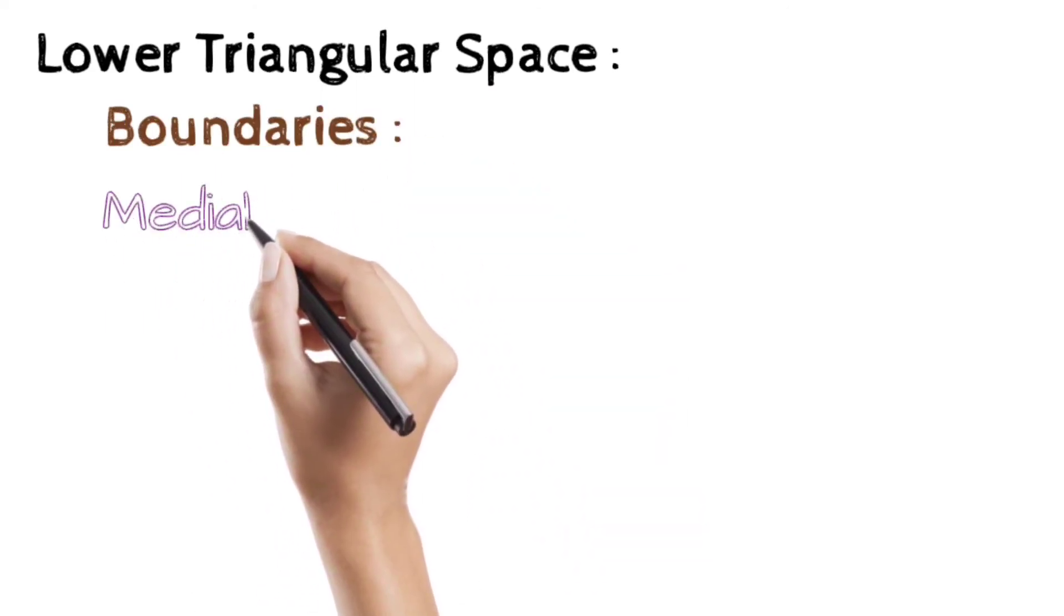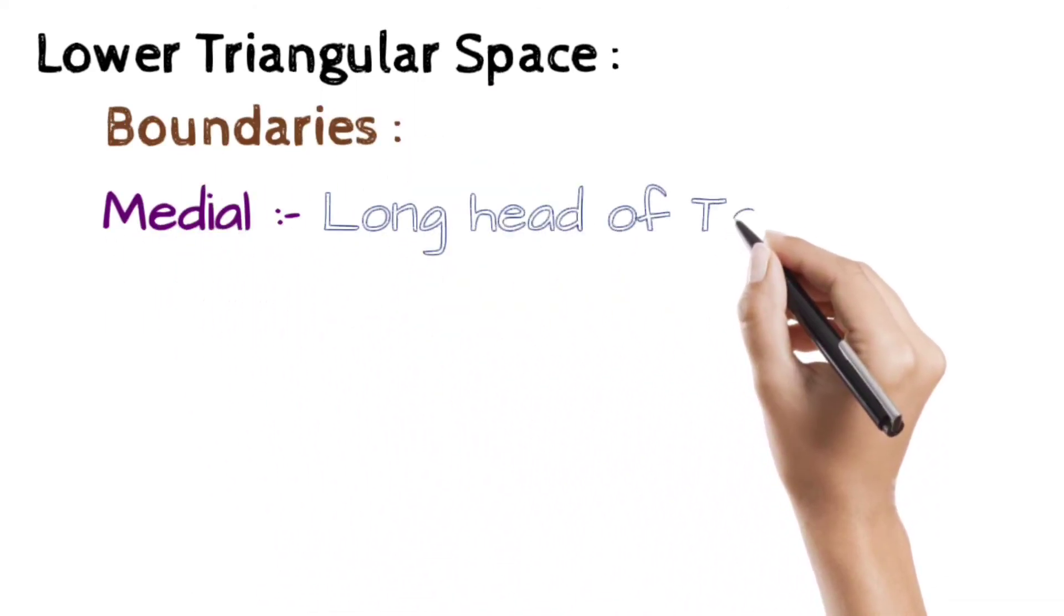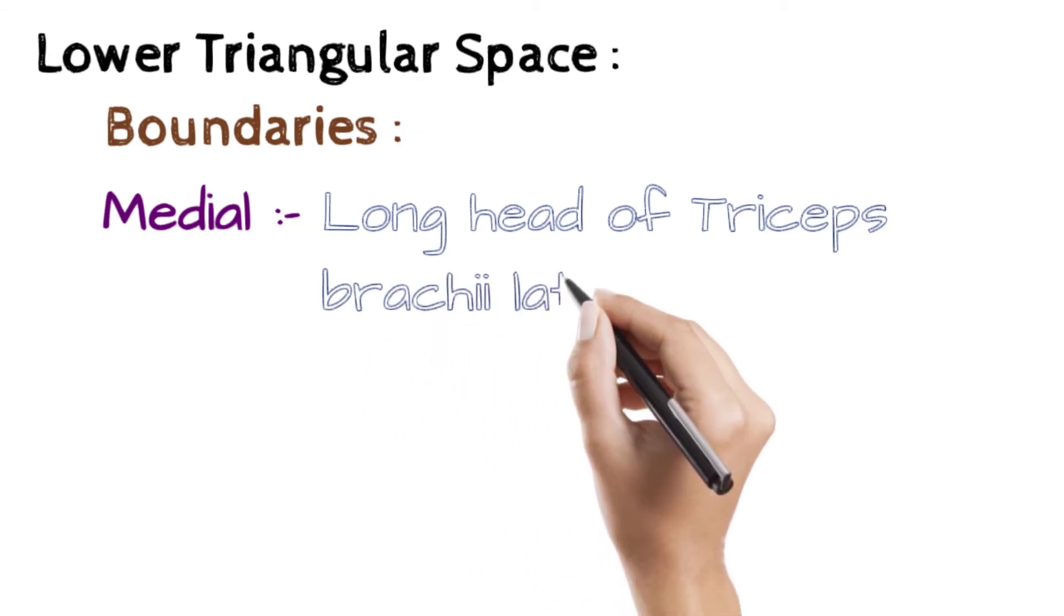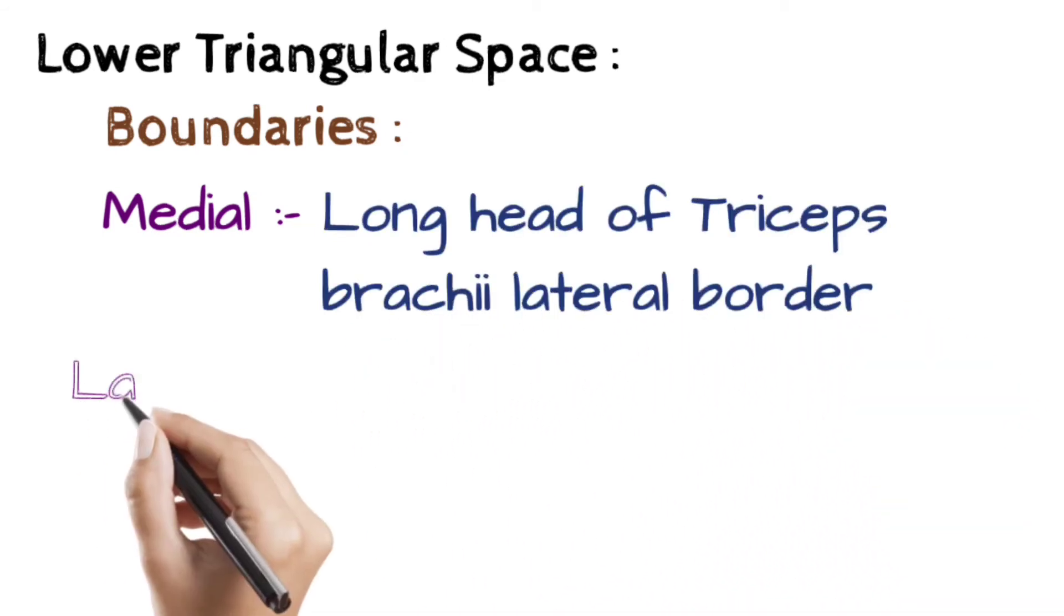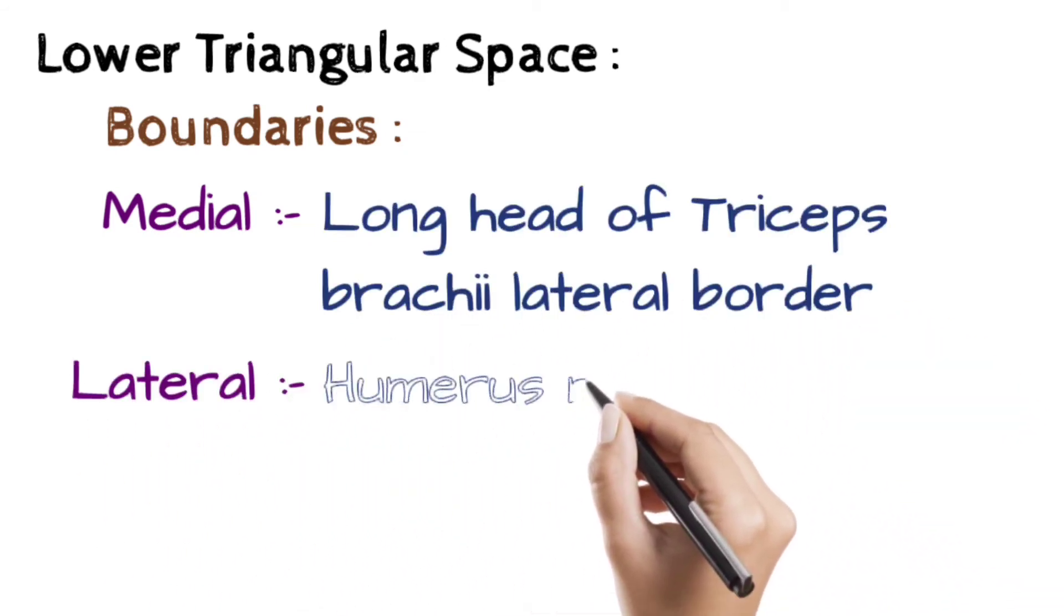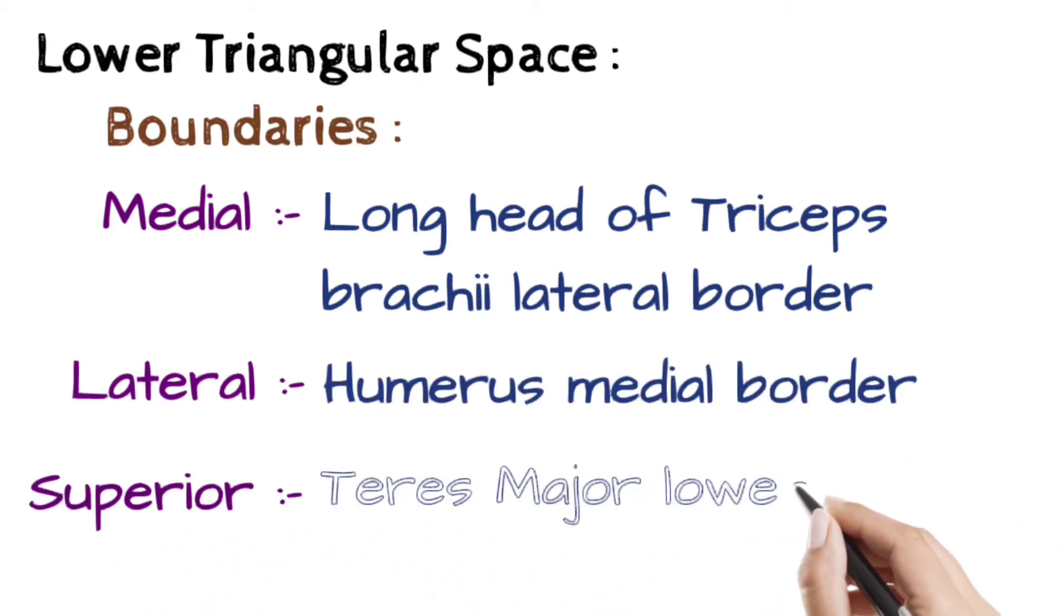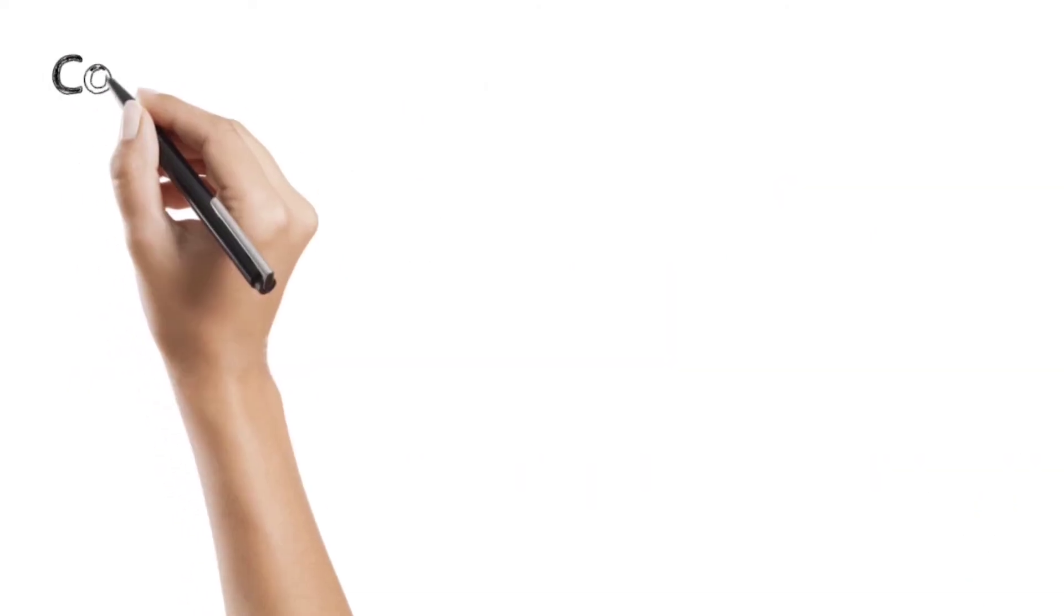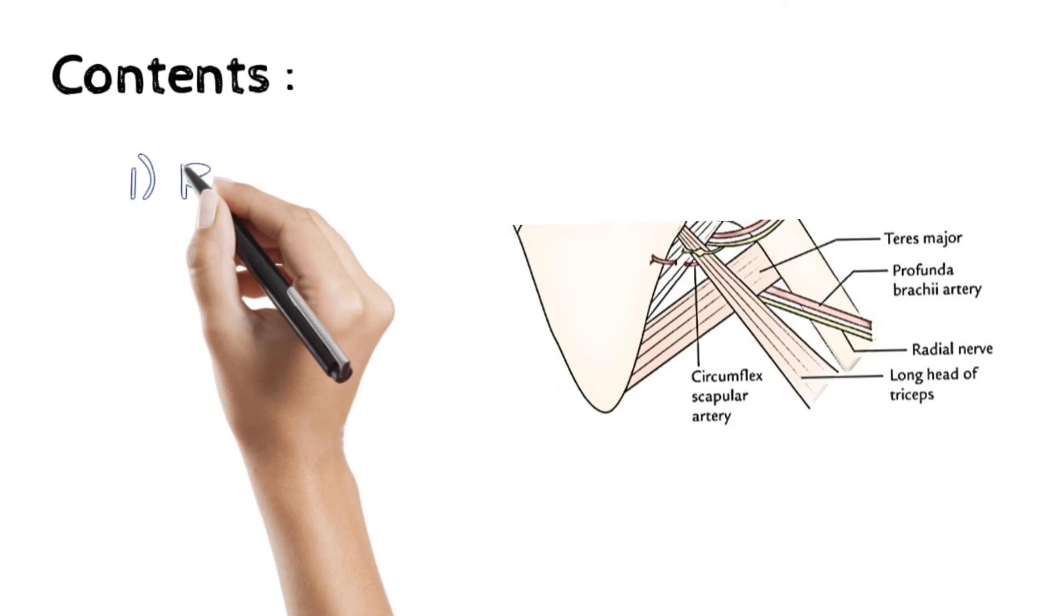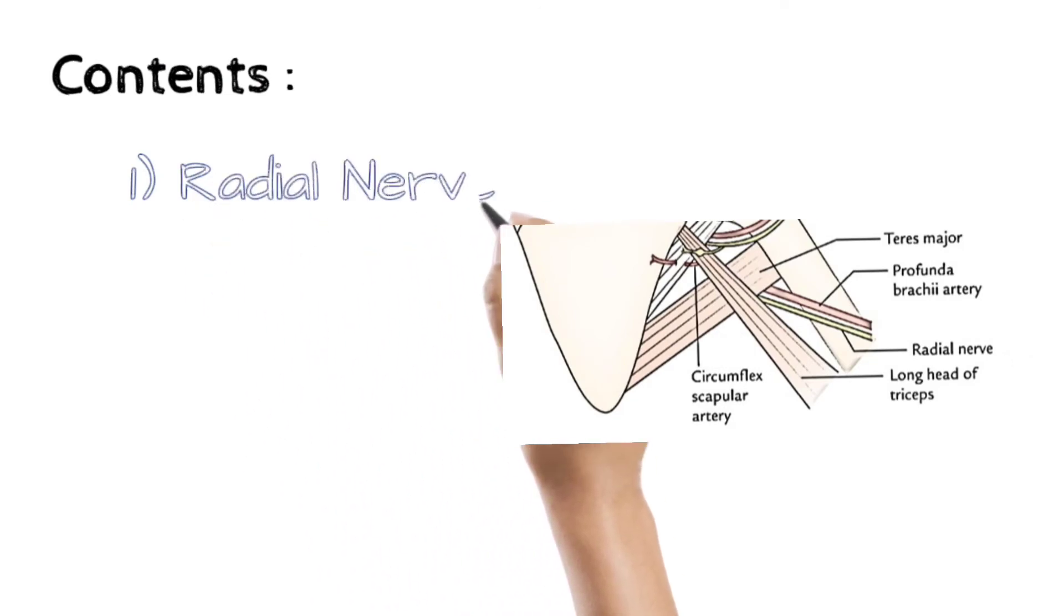Lower triangular space. Boundaries: Medially, long head of triceps brachii lateral border. Laterally, humerus medial border. Superiorly, teres major lower border. Contents: Radial nerve and profunda brachii vessels.